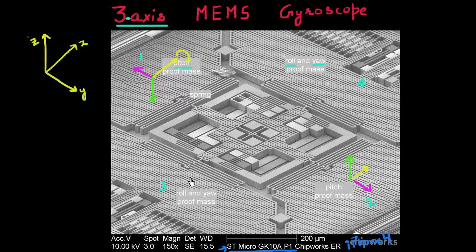These two proof masses are vibrating along these axes — if this one is going this way, the other one is going the opposite way. Now let's think about roll, meaning I have angular rotation along this particular axis. That would result again in a Coriolis force which will try to drown this proof mass and try to uplift this proof mass. By sensing the change in capacitance using this proof mass as the top electrode and the bottom electrode of the capacitor located below it, I can measure the roll.